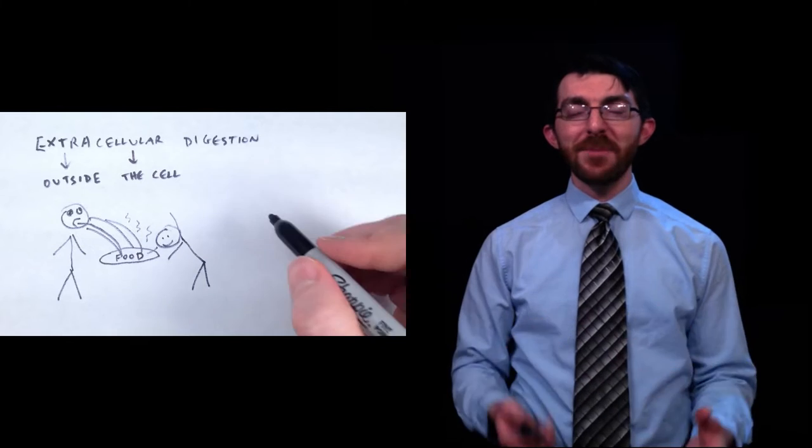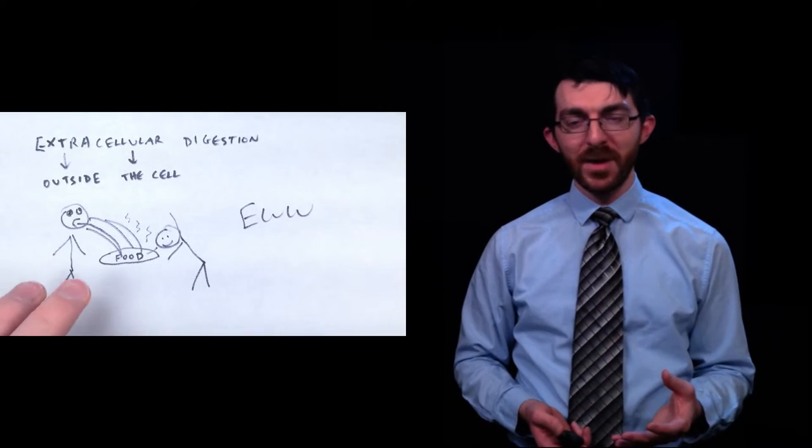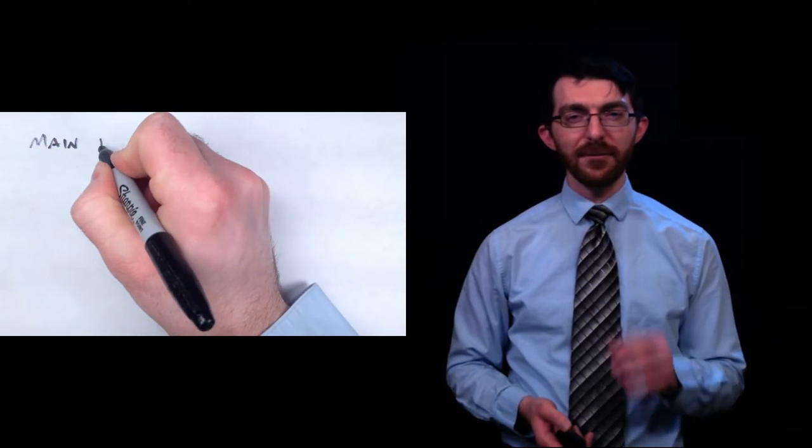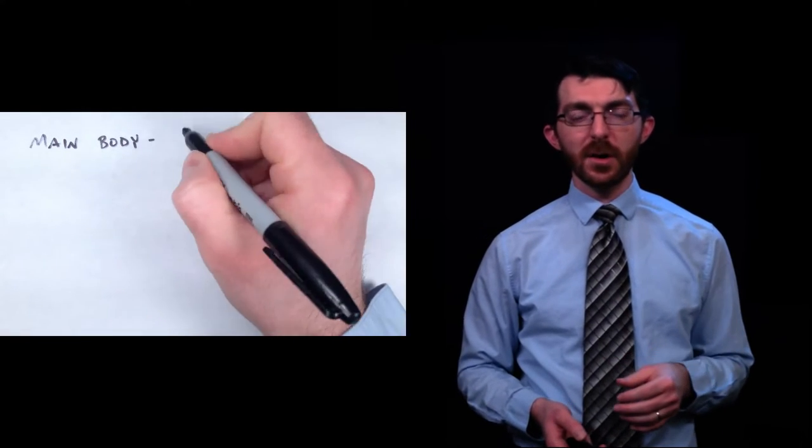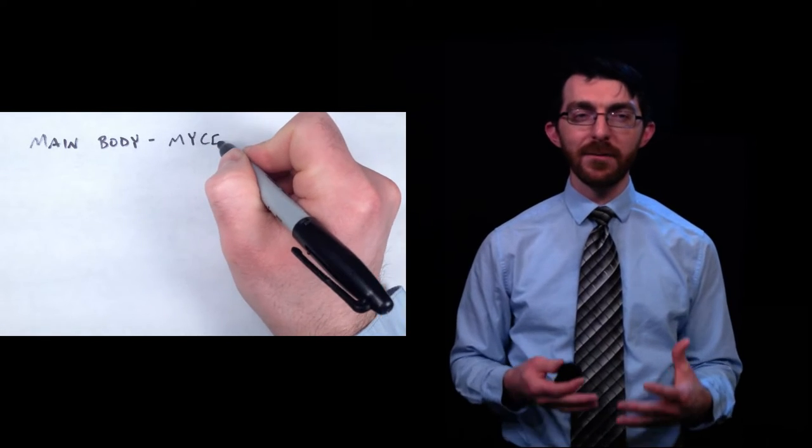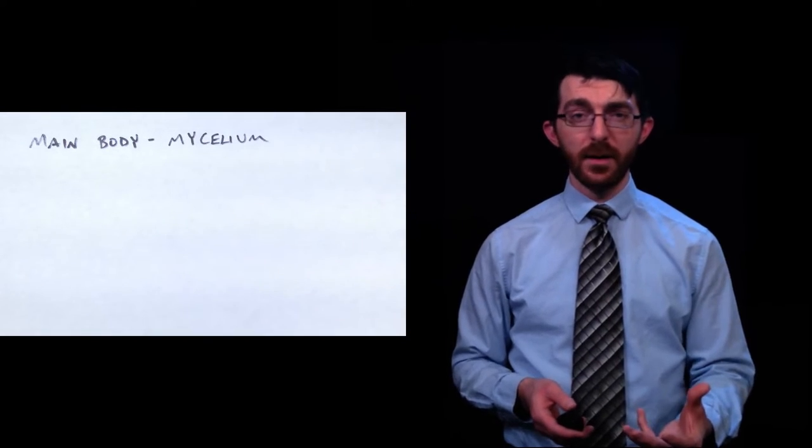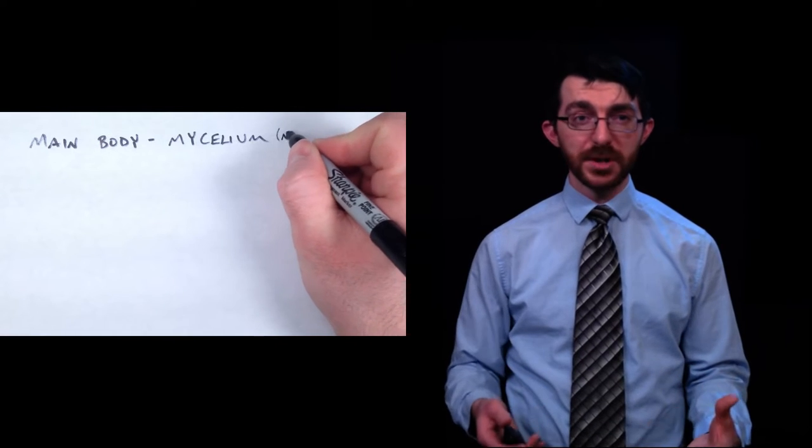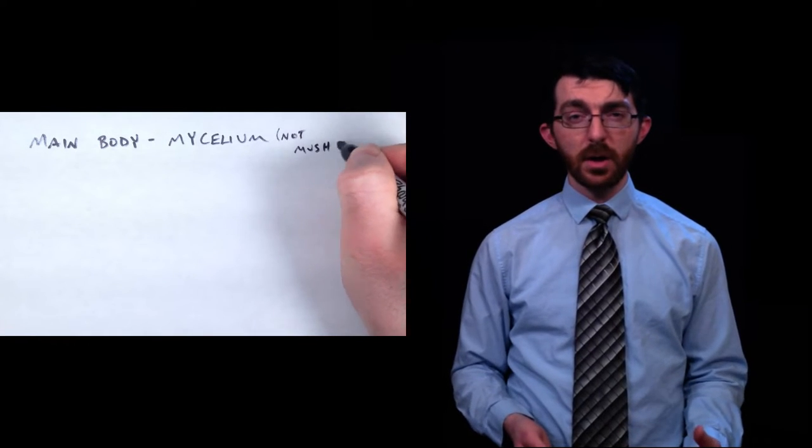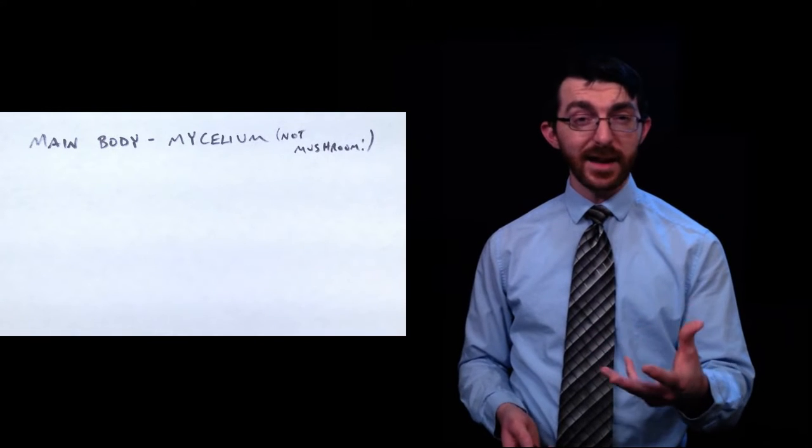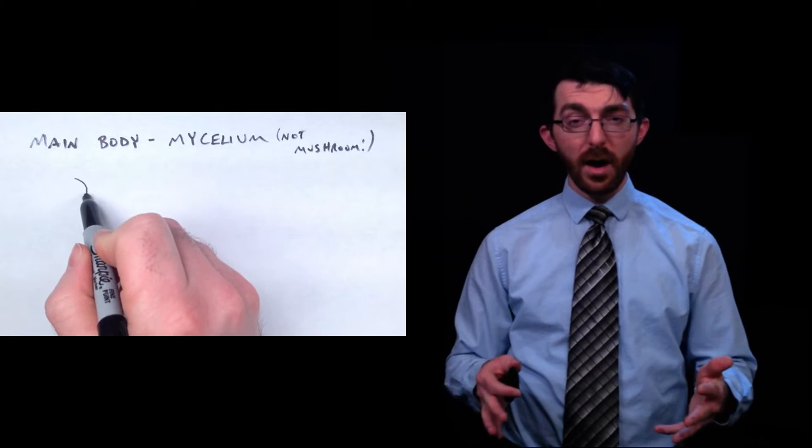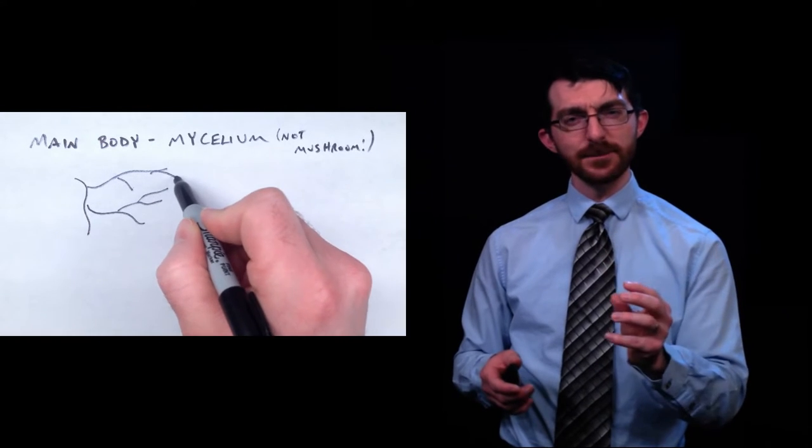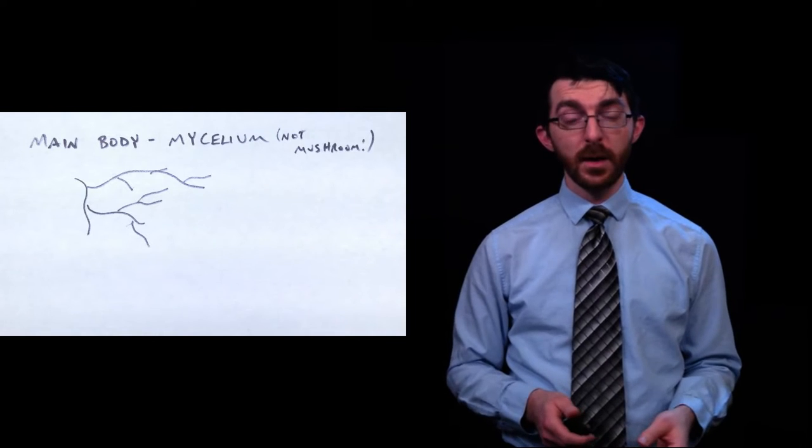The main body of a fungus is called mycelium. When we think about a fungus, we usually think about the mushrooms growing out of the ground or the fuzzy stuff growing on top of your food that's gone bad. That's actually not the main part of the fungus. The main part of the fungus is called mycelium, and that is the part responsible for the extracellular digestion and also the absorption of the digested food. If you're looking at the mycelium of a fungus, usually it looks like a kind of fibrous web. It almost looks like a fine system of really thin roots.